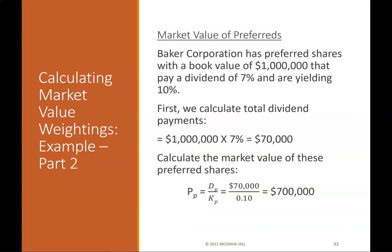Calculating market value weightings — example part 2 (preferred shares): Baker Corporation has a preferred share with book value of $1 million that pays a dividend of 7% and is yielding 10%. Total dividend payments = $1,000,000 × 7% = $70,000. Market value of preferred shares: P = D / K = $70,000 / 0.10 = $700,000.